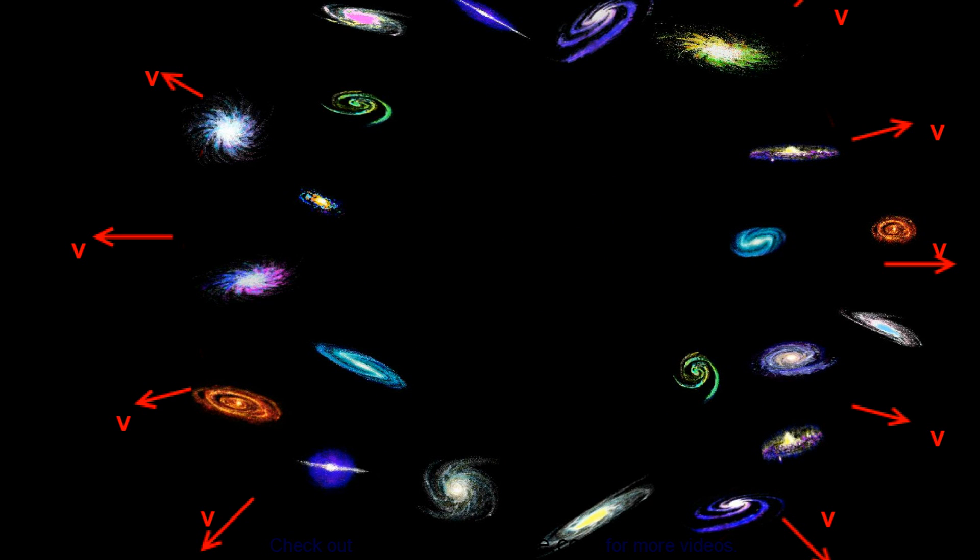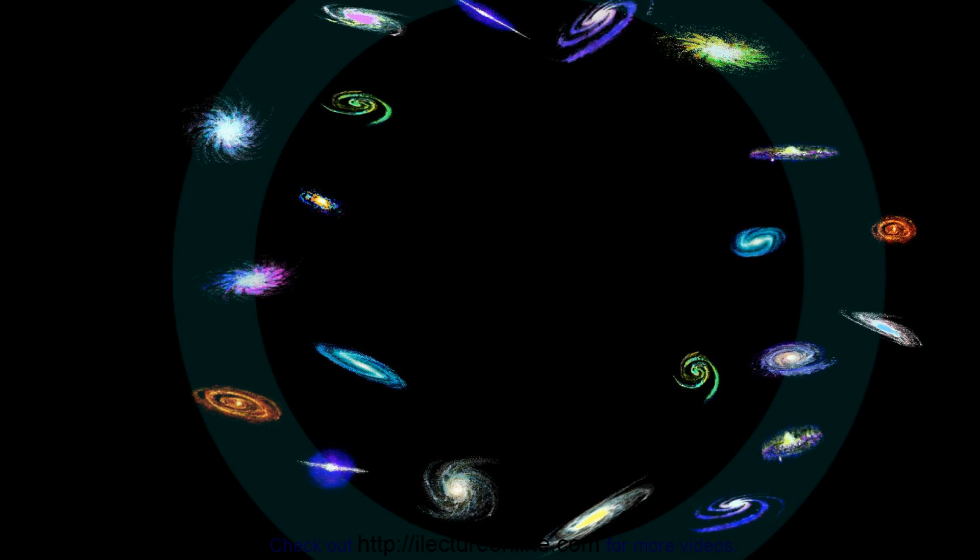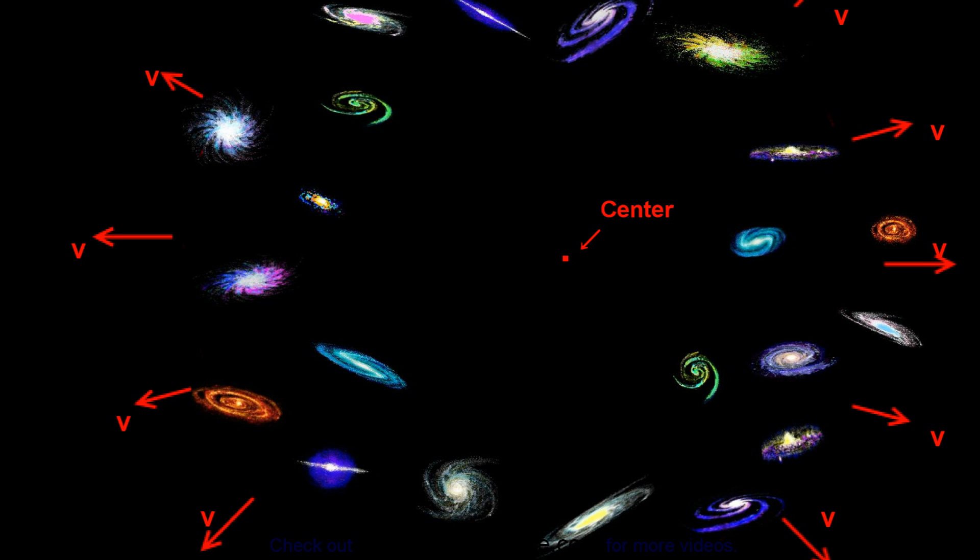Well, if it was an explosion, there can only be two scenarios. Either all the matter was thrown out at the same speed, but if that was the case, then all the galaxies currently would be in a ring shape around the center. All the matter would have been ejected away from where the explosion occurred.